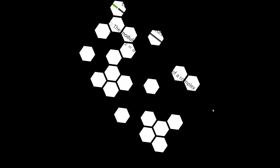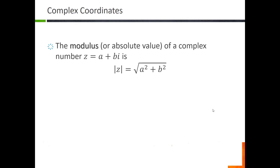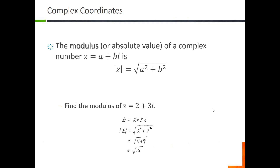Before looking at converting things to polar coordinates, we need to talk about the modulus or absolute value of a complex number. The modulus comes from the Pythagorean theorem: the modulus of a complex number Z is the square root of a squared plus b squared. For example, to find the modulus of Z equals two plus three i, we compute the square root of two squared plus three squared, which gives us the square root of 13.